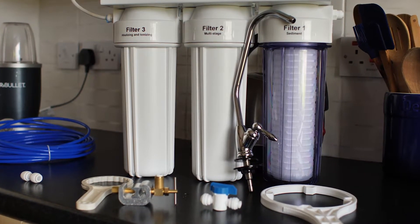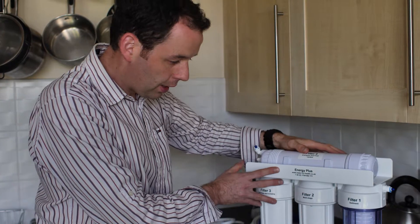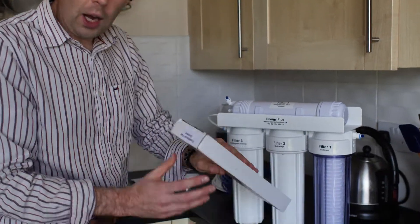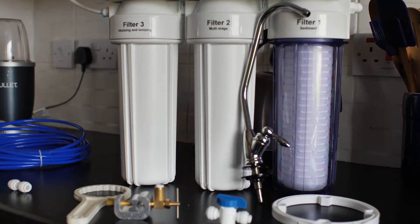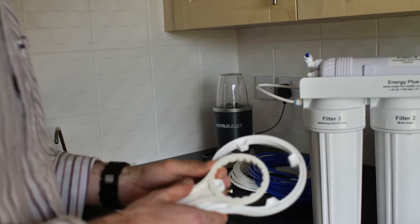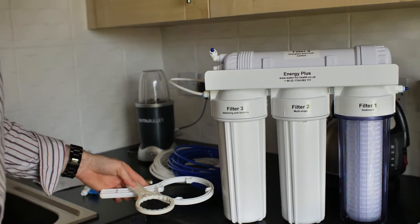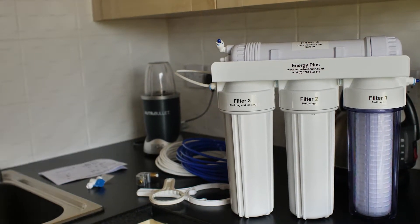When the pack is purchased, it will come with the system itself, the drinking faucet for the edge of your sink, and also the installation equipment and spanners, making for easy fitting and changing of the filters on an annual basis.